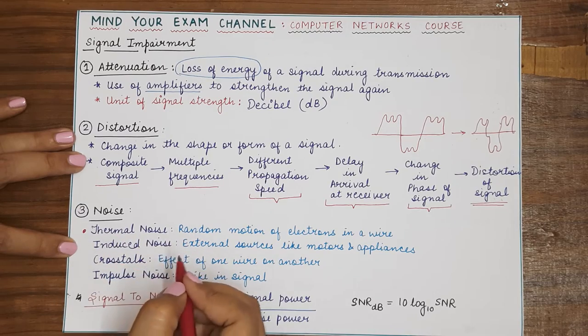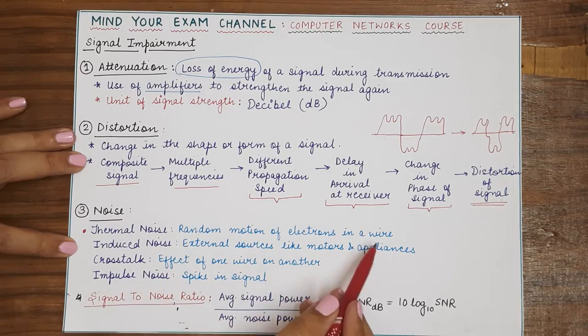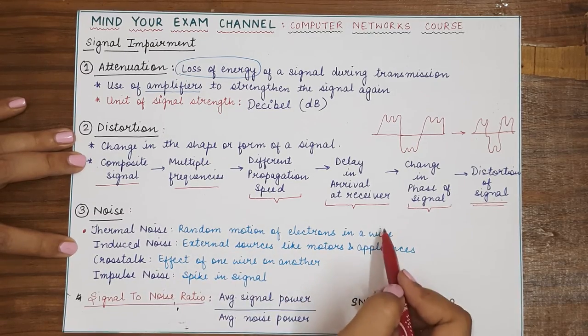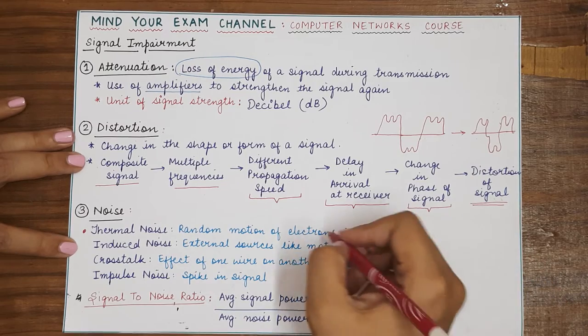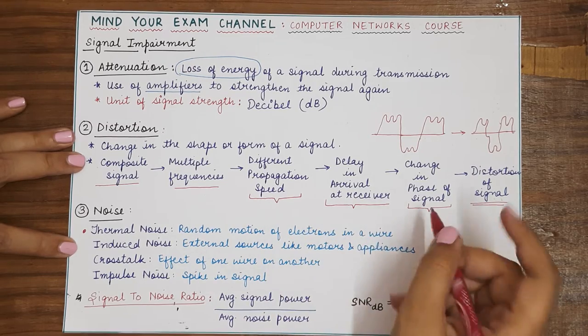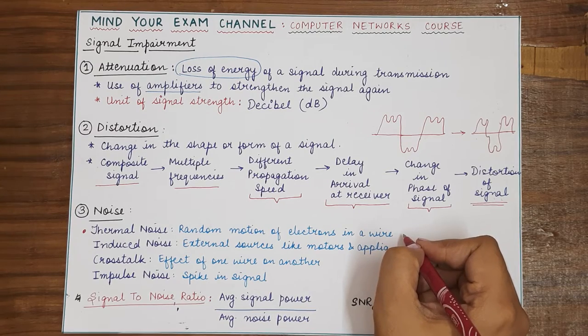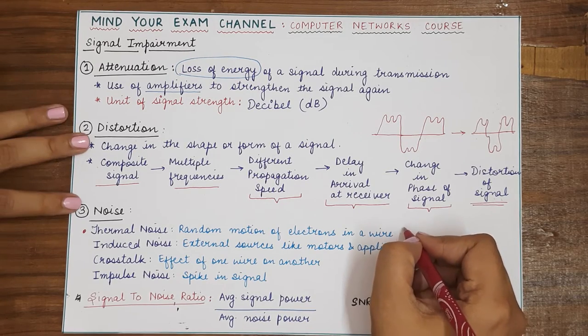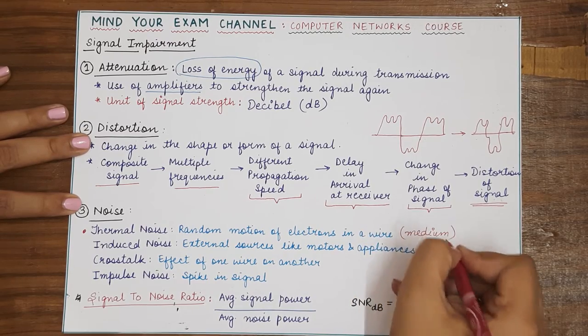So, noise can either be thermal noise. Thermal noise is basically caused by the motion, random motion of electrons within the wire in which the transmission is happening. Within random motion of electrons in a wire that is actually transmitting the signal which is actually being used as the medium of transmission.